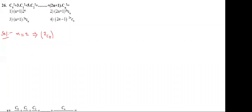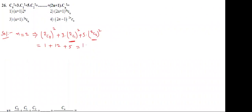Substitute n = 2 in the question: 2C0 whole square plus 3 into 2C1 whole square plus 5 into 2C2 whole square. 2C0 means 1, 1 squared is 1. 2C1 is 2, 2 squared is 4, and 4 threes are 12. 2C2 means 1, 1 squared is 1, 1 into 5 is 5. Total: we got 18.